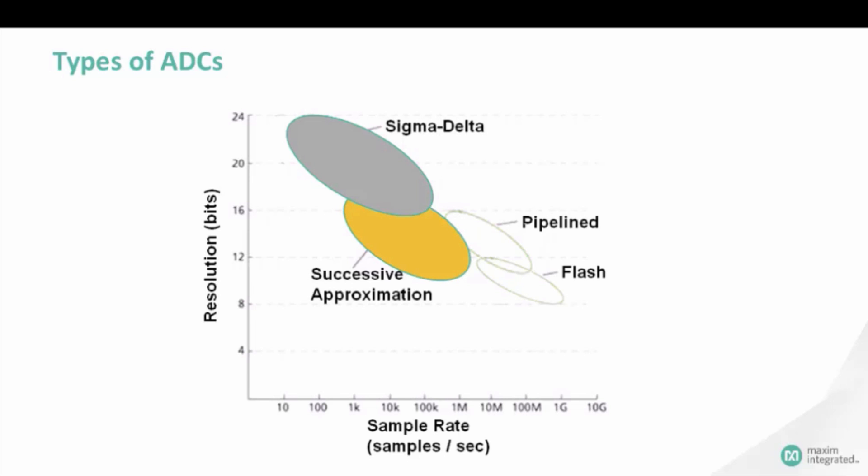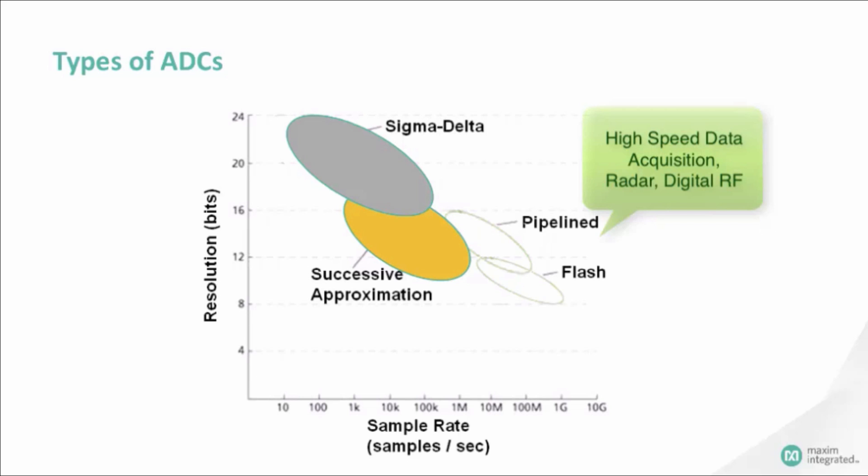Successive approximation, or SAR, architectures typically have a resolution from 8 to 16 or more bits, with a speed up to 5 mega-samples per second, and low power. They are typically found in applications, such as programmable logic controllers, test and measurement, and medical instruments.